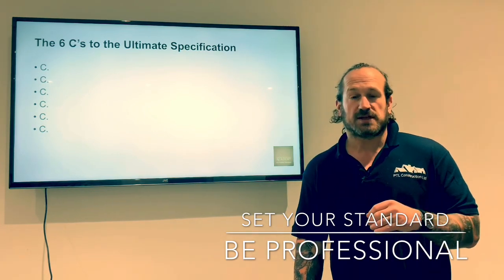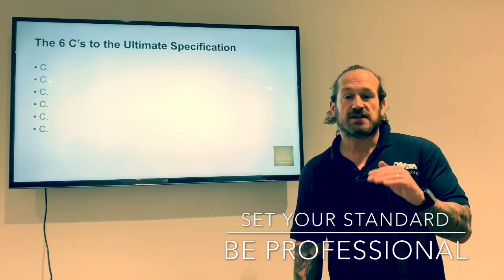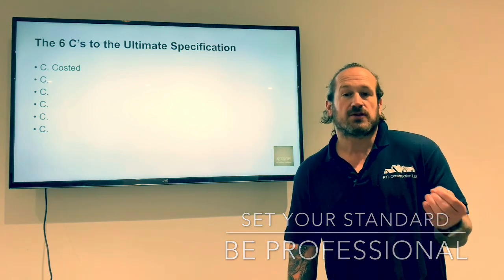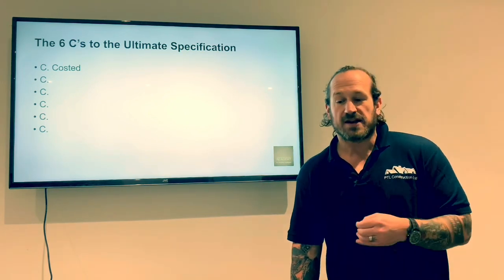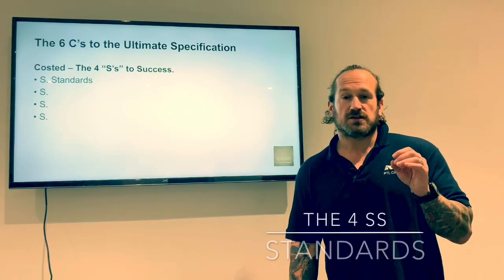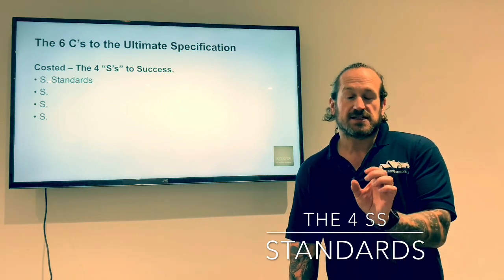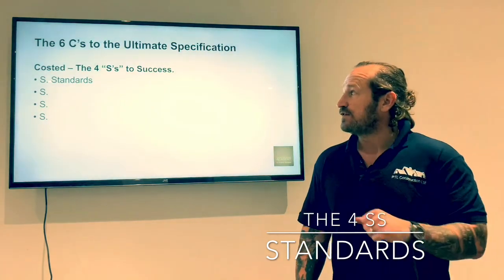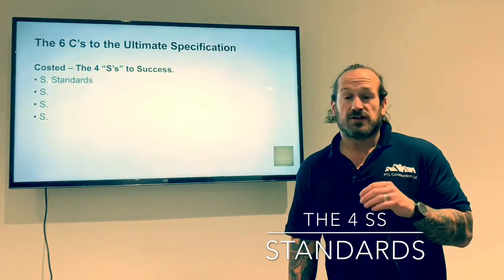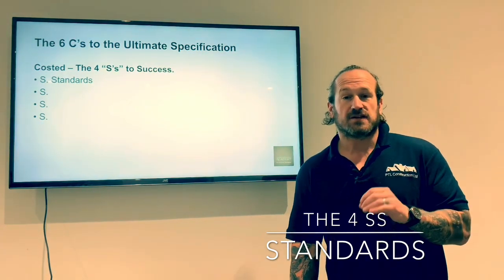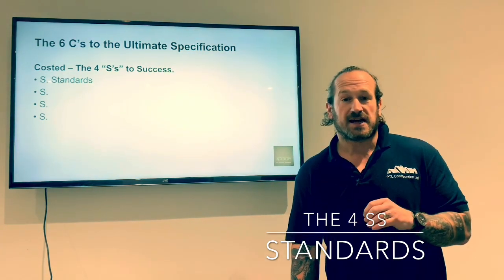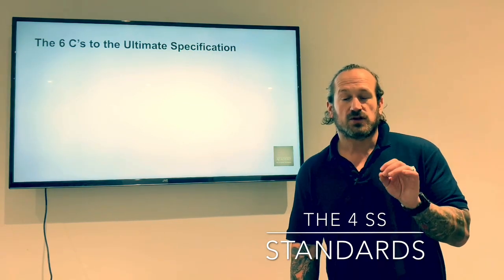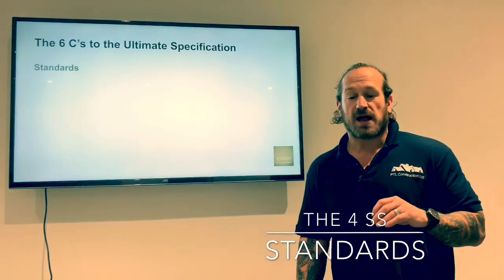The six C's to ultimate specification is broken down into six steps. The first step is to be costed — we need to produce the costs before we do anything. The costed section is further broken down into four more areas: the four S's to success. The first of those being standards. I'm going to rattle through these really quickly — I'm conscious that you get the most value from this brief.